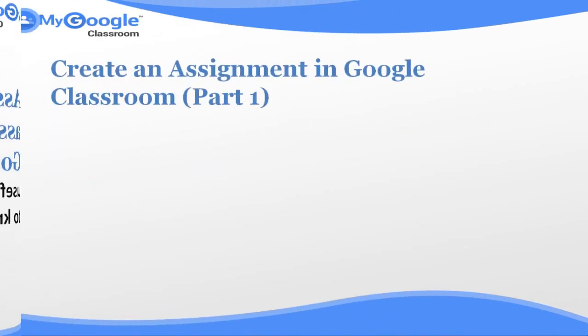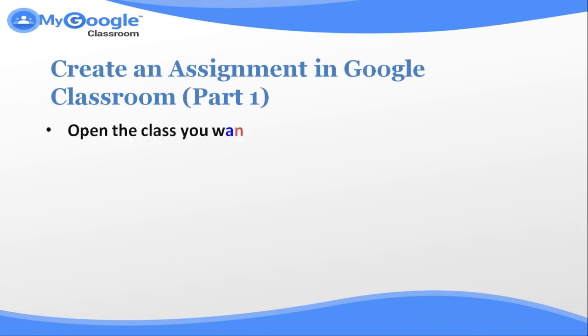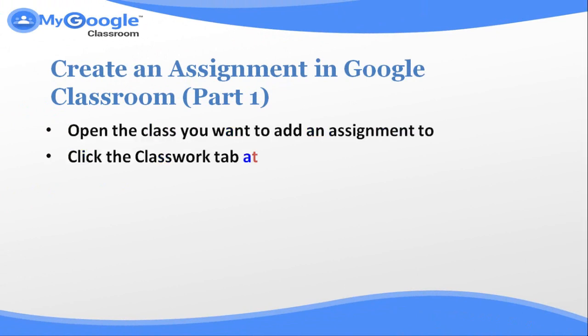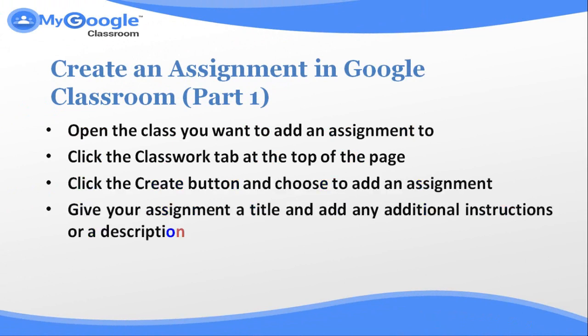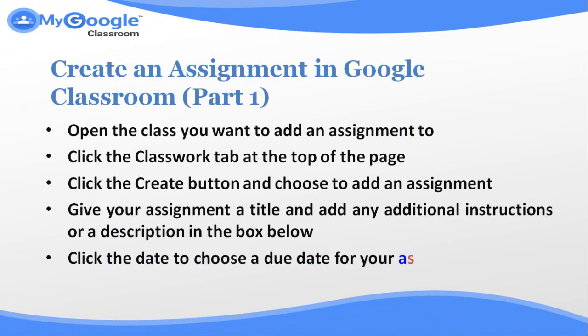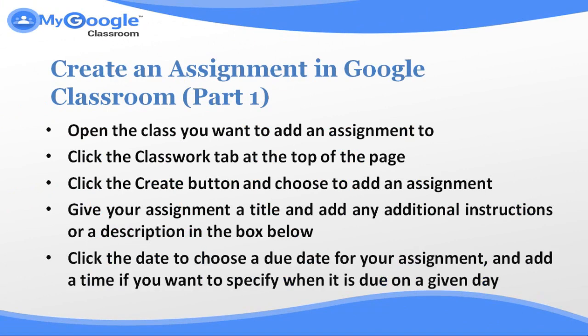Create an assignment in Google Classroom, part one. Open the class you want to add an assignment to. Click the Classroom tab at the top of the page, click the Create button, and choose to add an assignment. Give your assignment a title and add any additional instructions or descriptions in the box below.